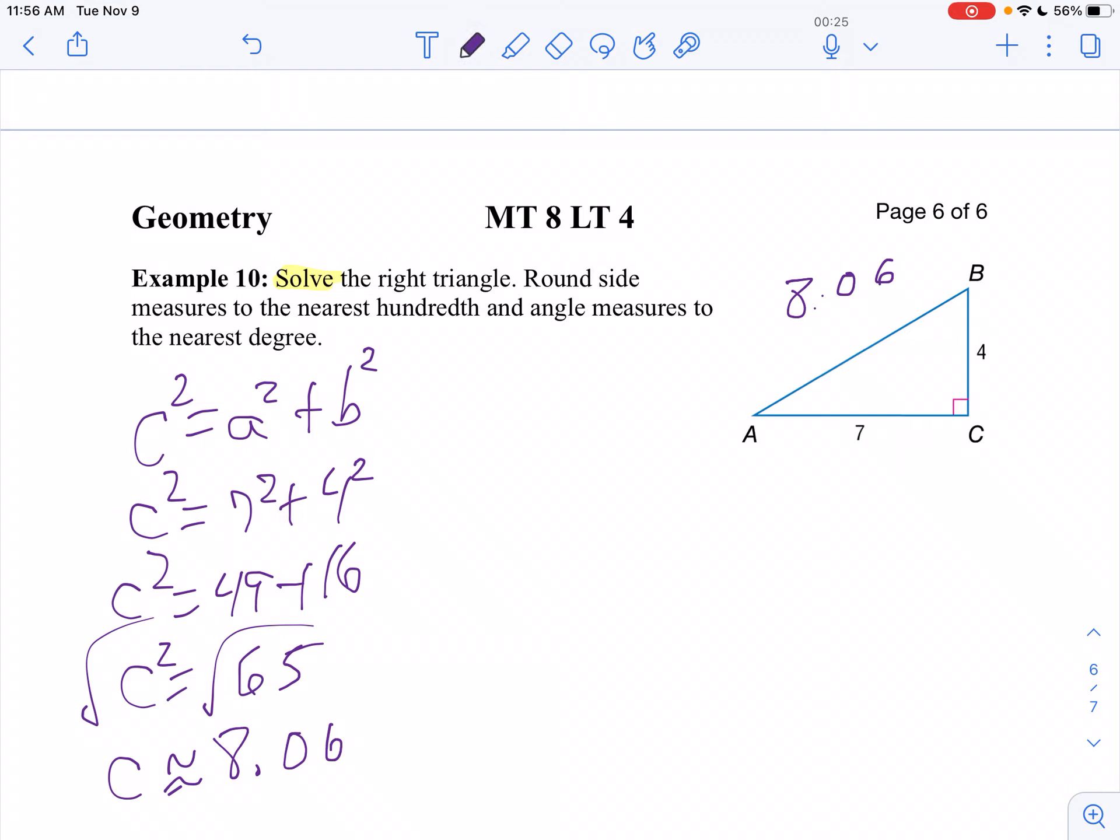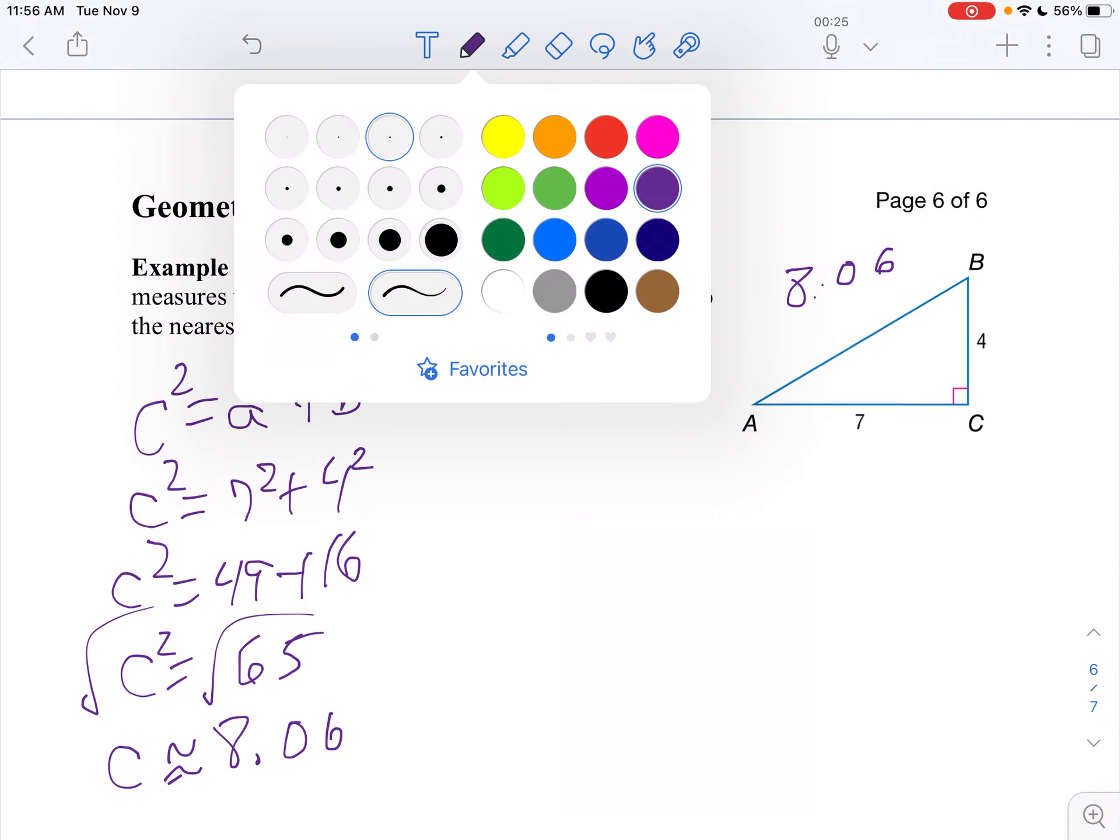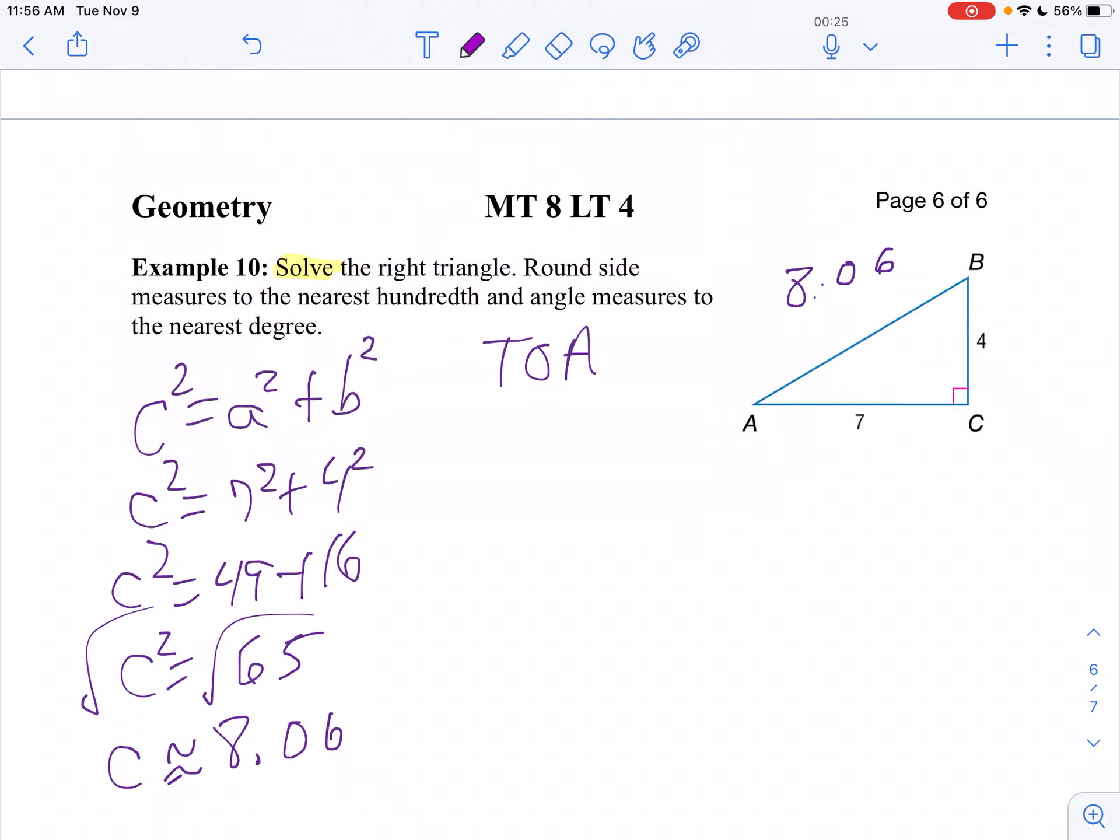So I'm going to use tangent because opposite over adjacent. So I'm going to say the tangent of angle A equals 4 over 7. So that means the measure of angle A is the inverse tangent of 4 over 7. So we'll use a calculator then.